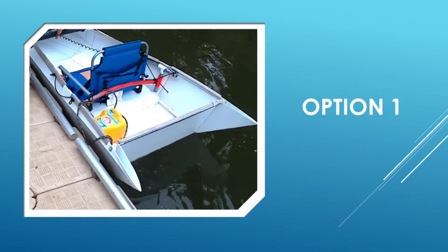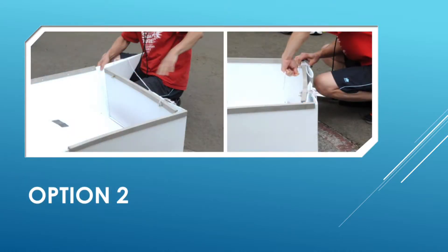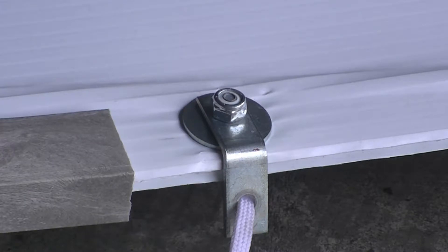Design one has a pointed stern. Design two has a flat stern. I'm going to demonstrate how to fold the boat together and how to hold the stern together.